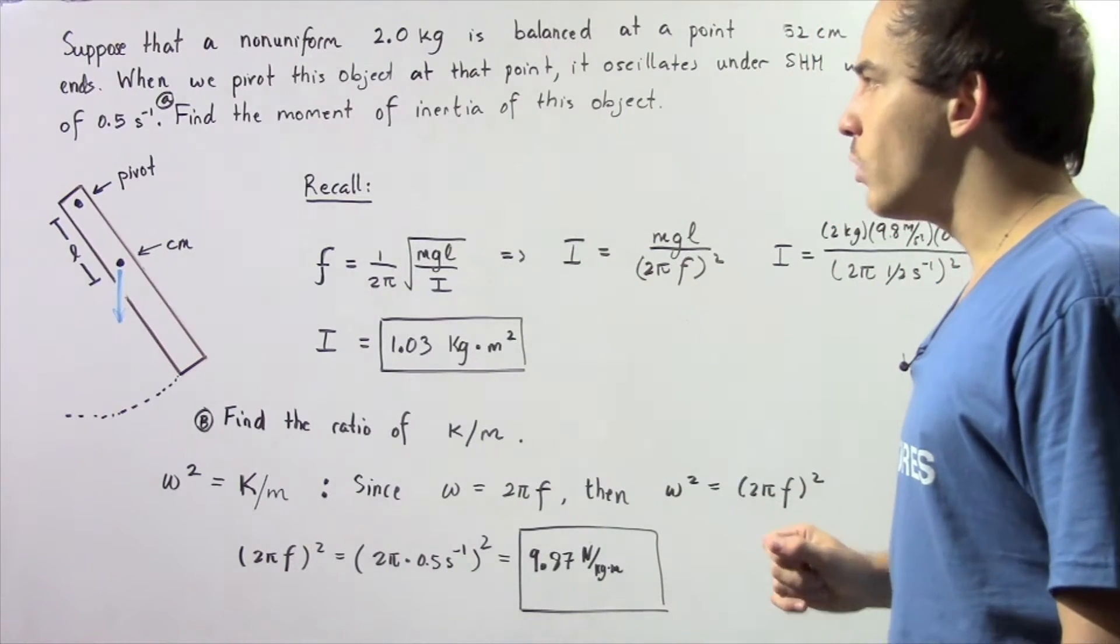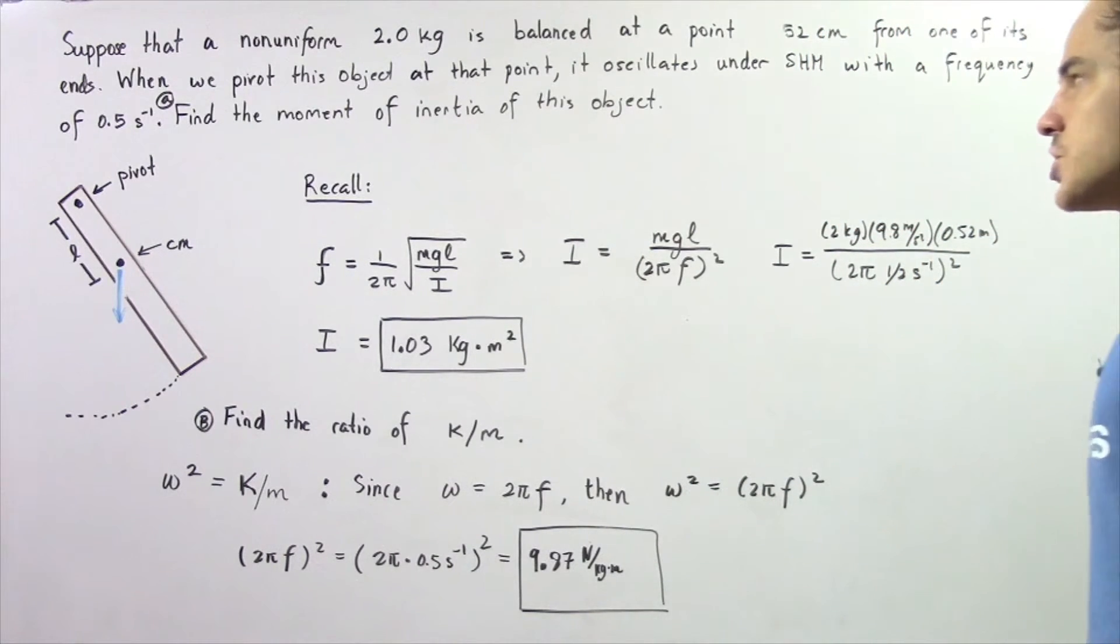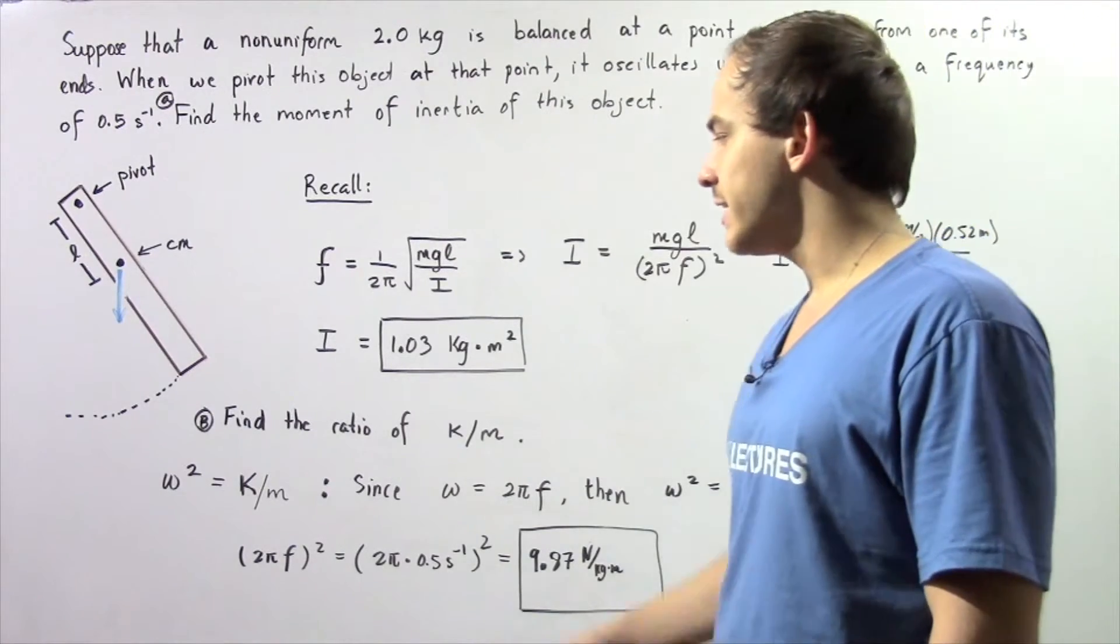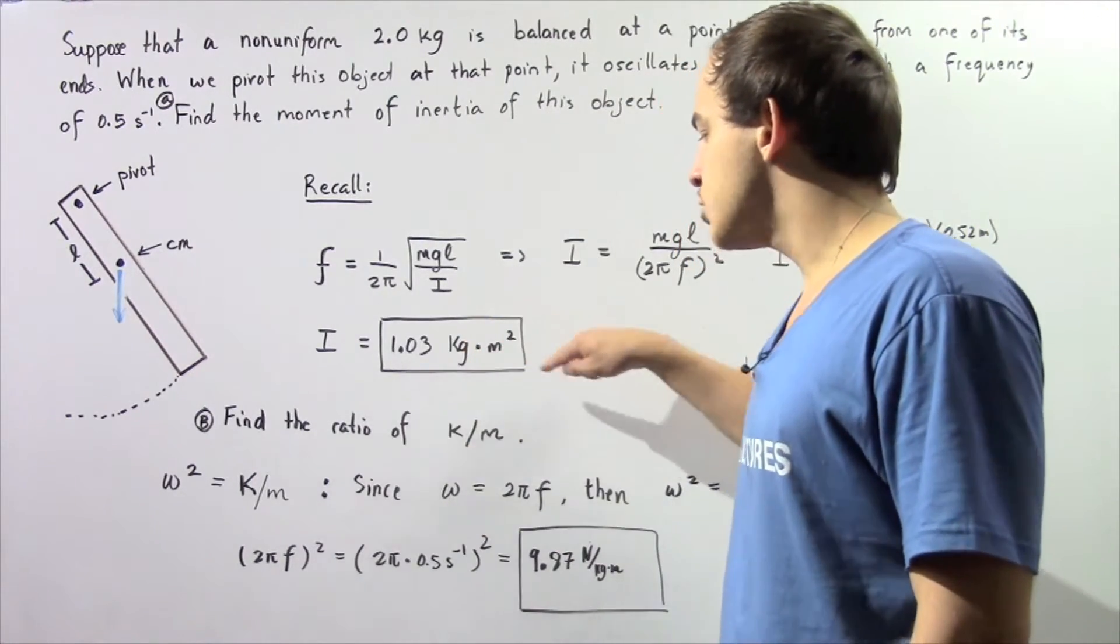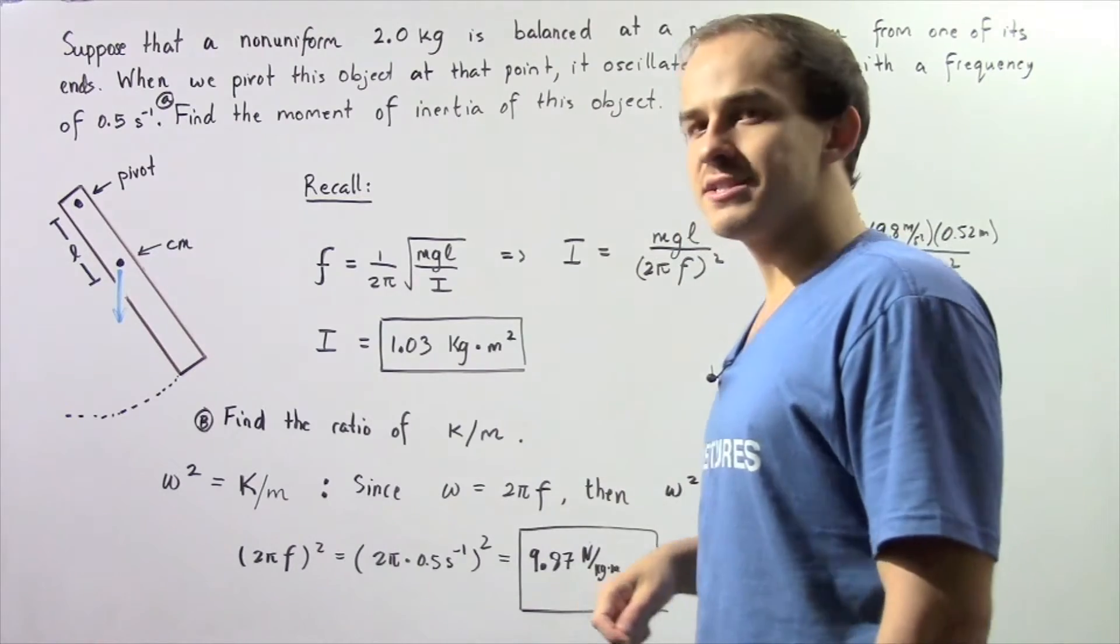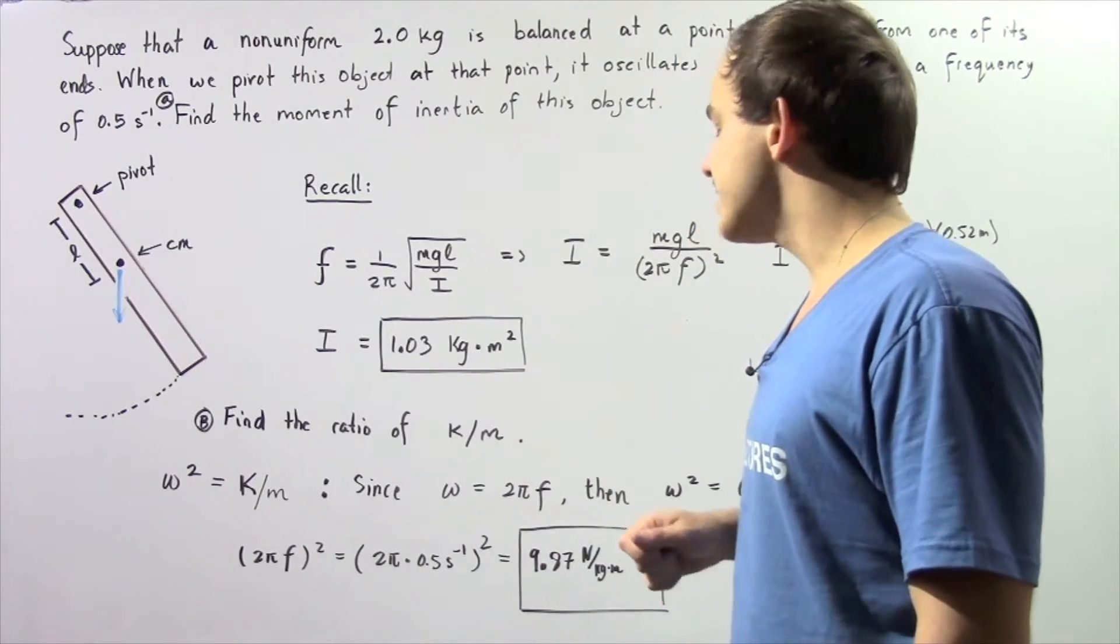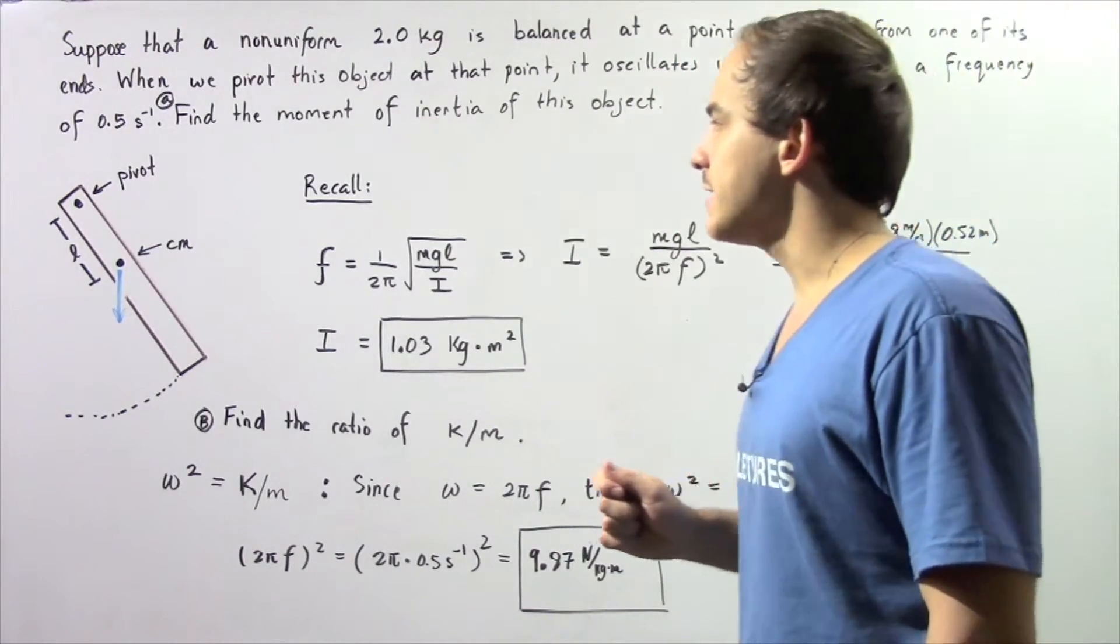In part A we want to find the moment of inertia of our object, and in part B we would like to calculate the ratio of k to m, where k is the spring stiffness constant and m is our mass. So let's begin with part A.